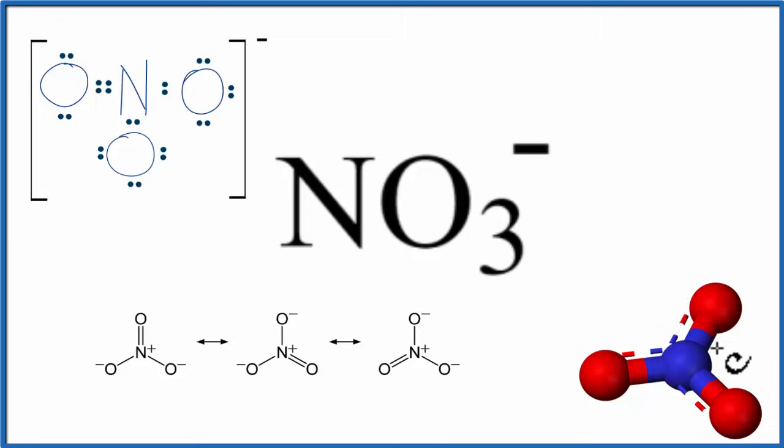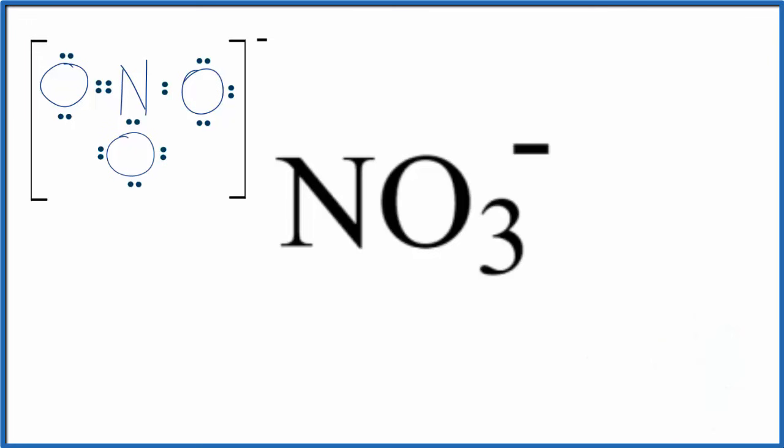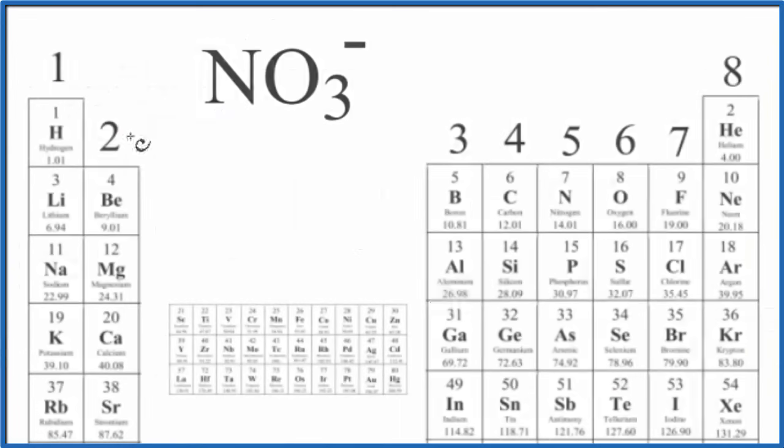So the first thing we need to do to draw the NO3 minus Lewis structure is count up the valence electrons. We have the periodic table here. Each group has the number of valence electrons listed. We skip the transition metals.